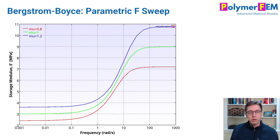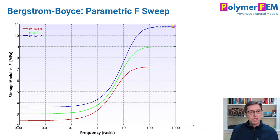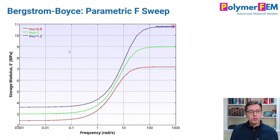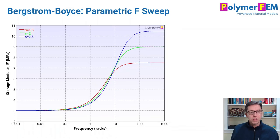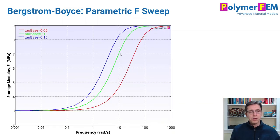For parametric studies of frequency sweeps, sweeping frequency from very low to very high and varying the mu parameter from 0.8 to 1 to 1.2 (keeping all other parameters constant), the curves simply shift upward with mu as expected. The S parameter allows you to change the top value of the storage modulus without changing the initial value, shifting amplitude. The tau_base parameter shifts the curves horizontally.